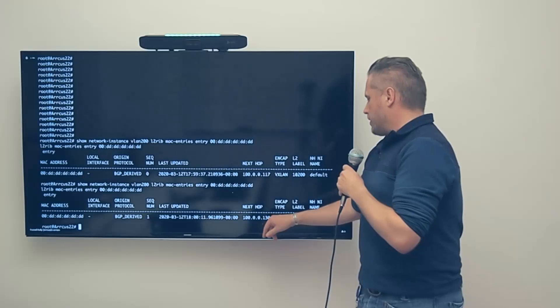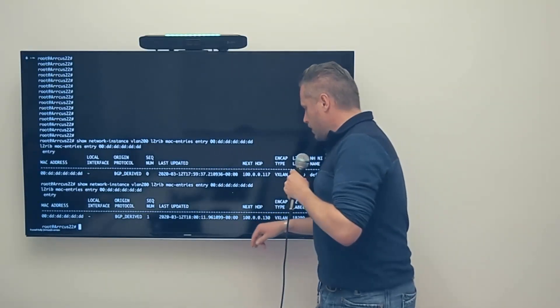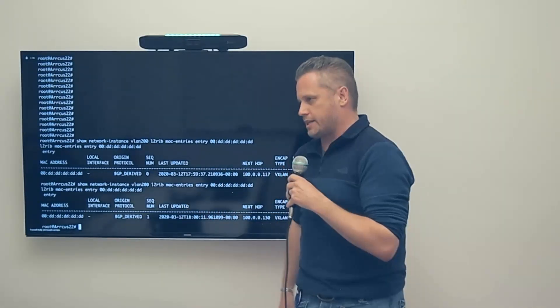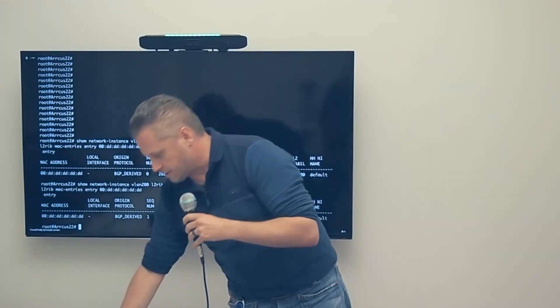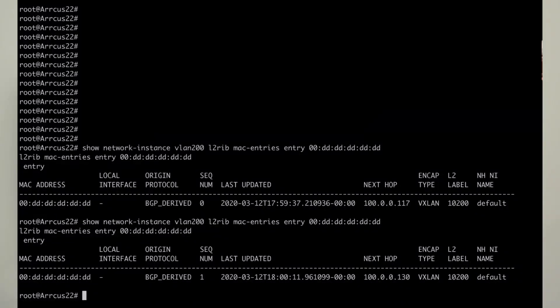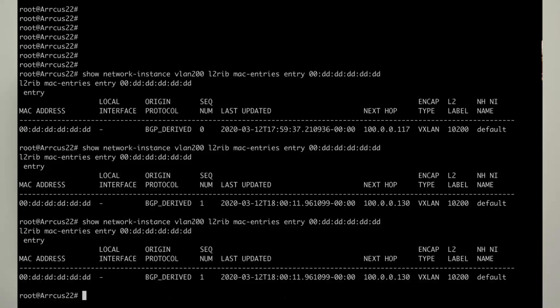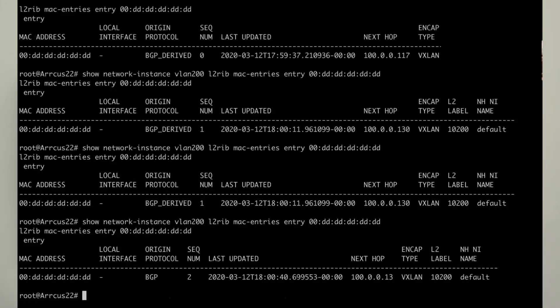At this point, the MetaSwitch VTEP incremented that sequence number and advertised it out to the rest of the VTEPs. Once we move that MAC one more time, we should have updated. Give it a second. There we go. Currently, we are behind the Arista VTEP .13. It has incremented the sequence number by 1. From an Arrcus standpoint, it is still a remote MAC. But we're tracking the sequence number as this has moved now 1, 2, 3 hops.